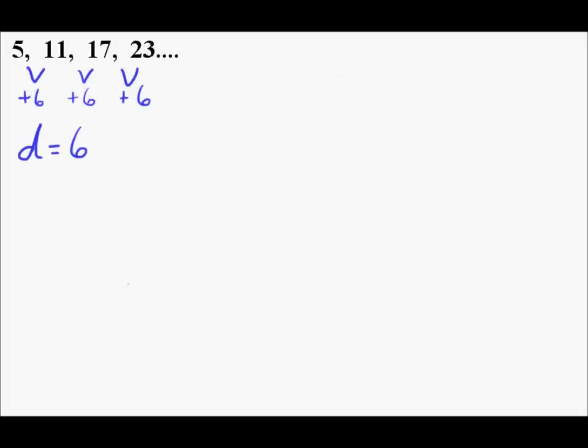Now another important term here is the first term. They give us the first term here, they don't always do, but in this case they do. The first term, and you write it u sub 1, is 5.